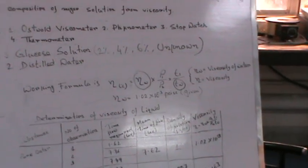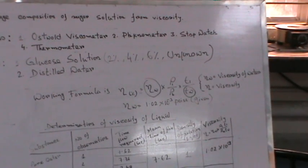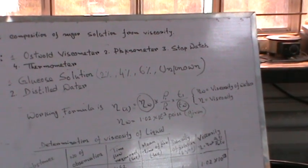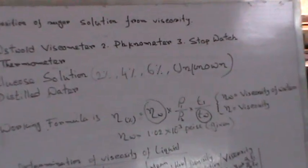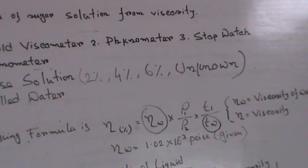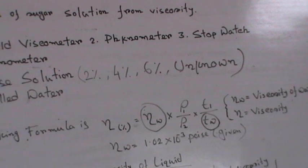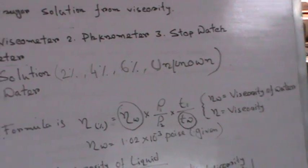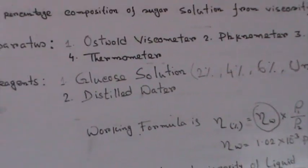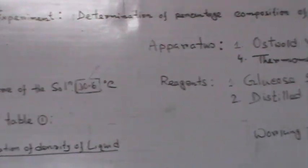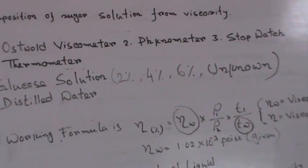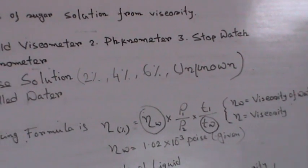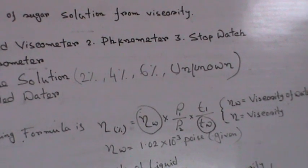As you just saw, we did the experiment for water solution. The working formula is: eta equals eta_w times (rho1 / rho2) times (T1 / T_w), where eta_w is the viscosity of water and eta is the viscosity of the solution. Today's temperature is 30.6°C, and at that temperature eta_w is given as 1.02 × 10⁻³ poise.